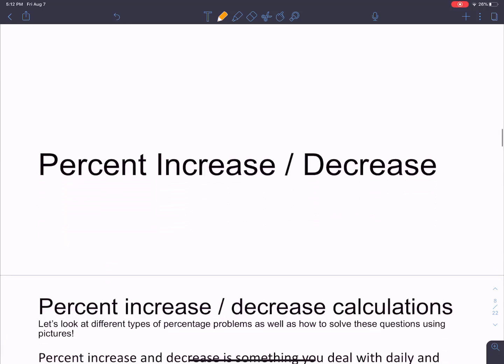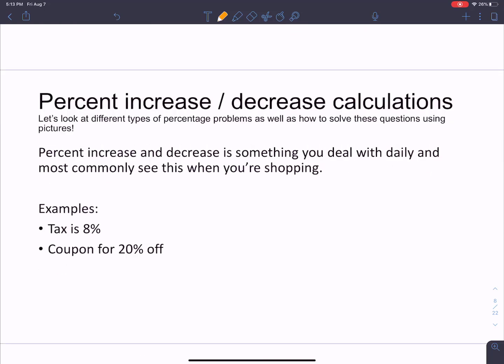And then we have different percent increases and decreases. Percent increase and decrease is something that you see every day, especially when you go shopping. Anytime you hear, hey, tax is 8%. That means I'm taking the amount that whatever's in your cart would normally be, I'm going to figure out what 8% of that is, and then I'm going to tack it on top. You're going to pay more by 8%. That's what taxes is. That is a percent increase. I've increased the amount that you're actually going to pay. A coupon for 20% off. How do you calculate that? You take the amount that you have in your cart, you calculate 20% of that, and then you subtract it off that amount. That means I am decreasing the amount of money you're going to have to pay in the end. So a coupon for 20% off is an example of a percent decrease.